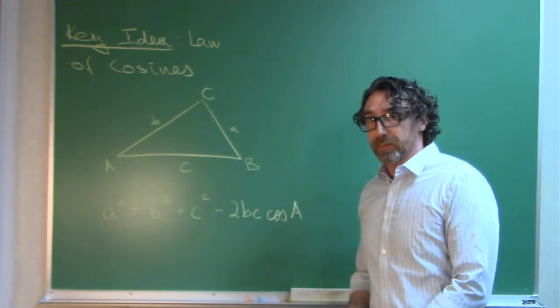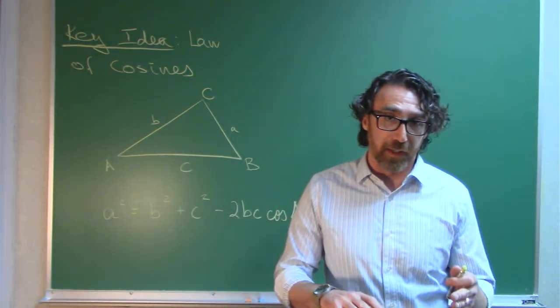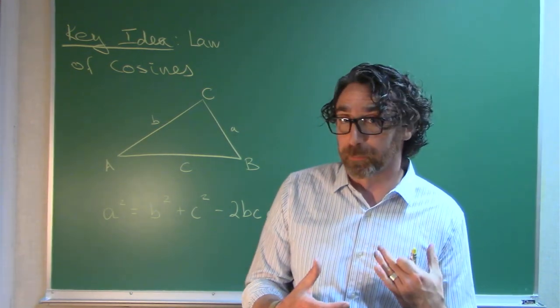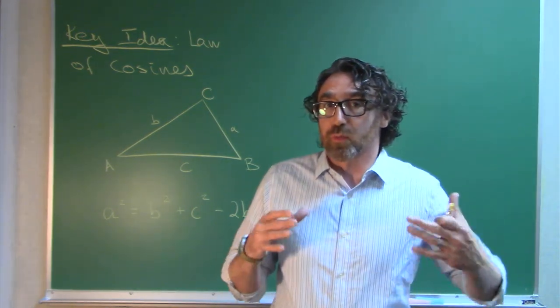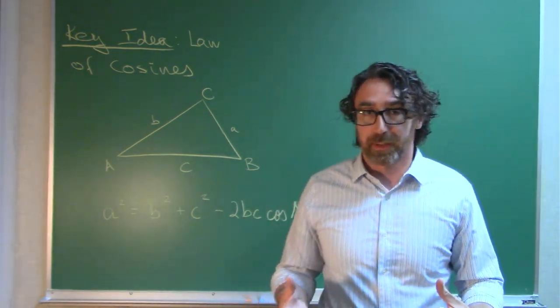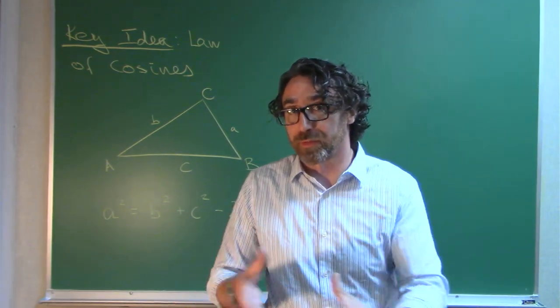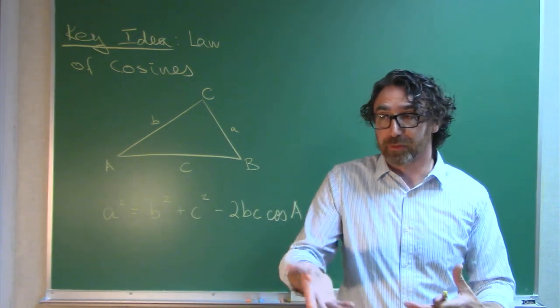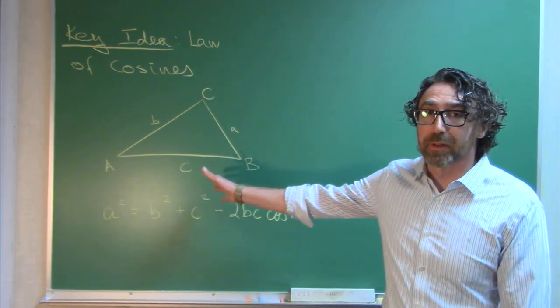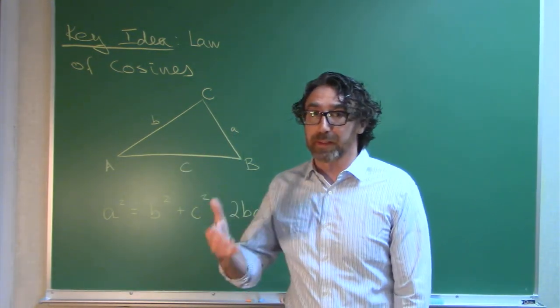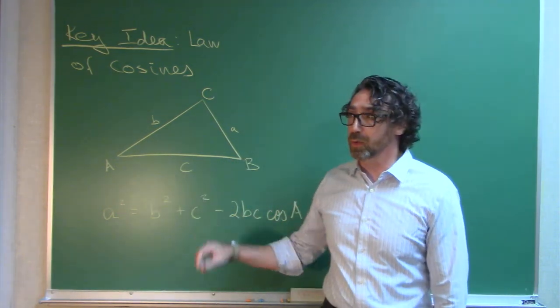In the previous couple of videos, we had focused on the law of sines, and that gave us a way to solve triangles that were not necessarily right triangles. This is another rule that can help us solve triangles that are not necessarily right triangles. It's called the law of cosines.